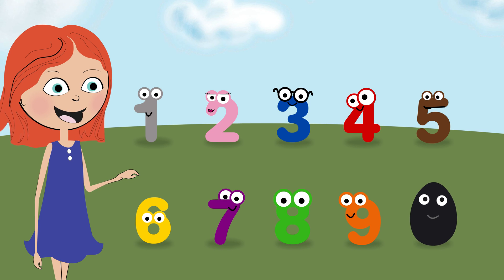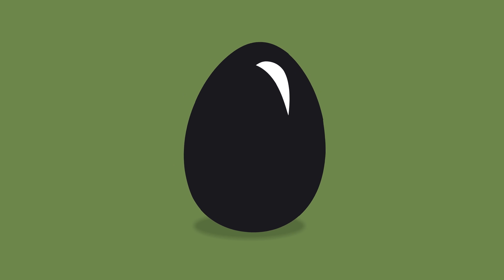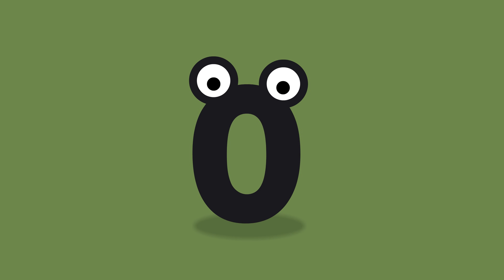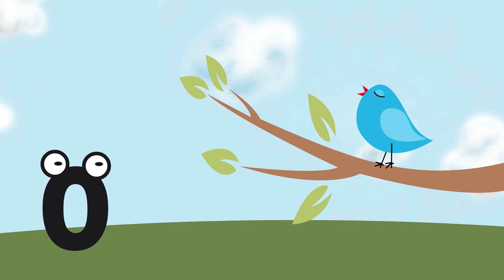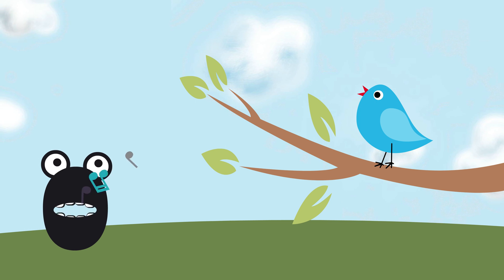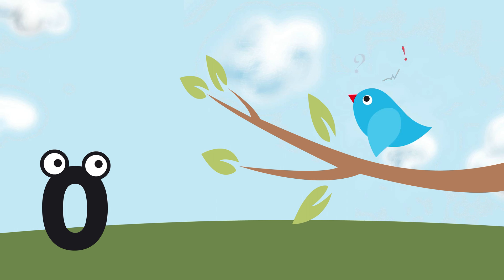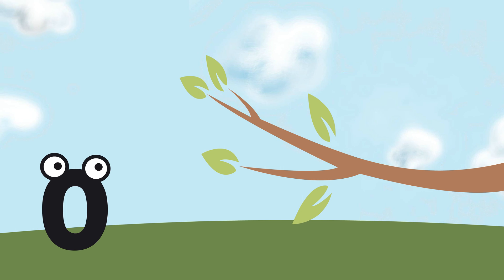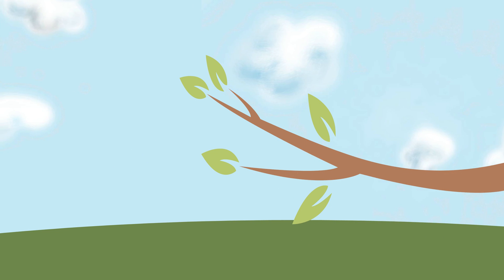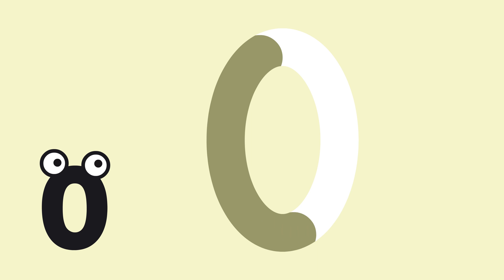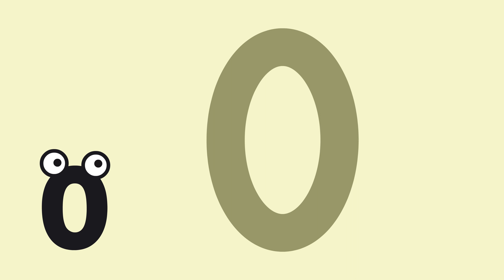What could be inside the black egg? Zero. Zero. Zero. Zilch. The bird flew away. None stayed here. Zero. We write number zero like this. Zero.